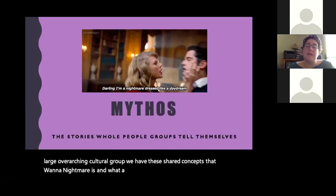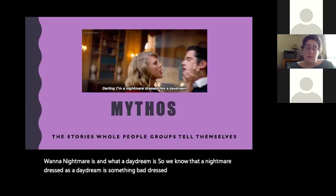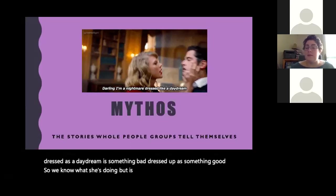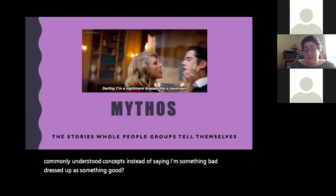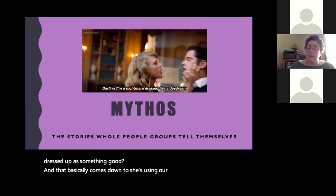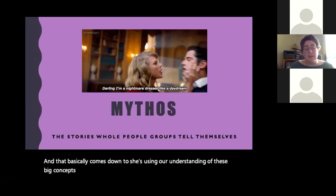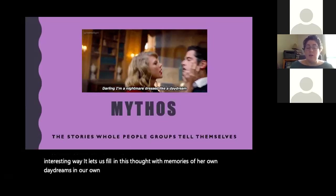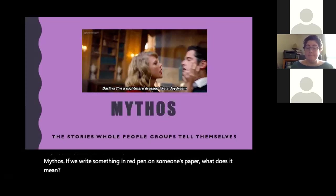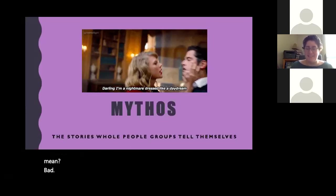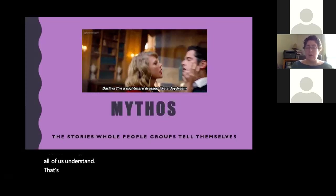So we know that 'a nightmare dressed as a daydream' is something bad dressed up as something good — we understand what she's doing. But why use these commonly understood concepts instead of just saying 'I'm something bad dressed up as something good'? It comes down to using our shared understanding of big concepts to communicate something clearly and quickly in a more interesting way. It lets us fill in the thought with memories of our own daydreams and nightmares. Colors are another great example of mythos — if you write something in red pen on someone's paper, what does it mean? Bad, needs revising, something went wrong.